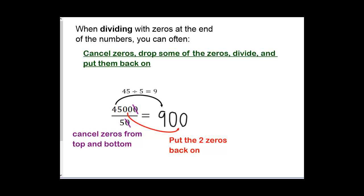Our first example is 45,000 divided by 50. One zero on the top and one zero on the bottom cancel because that's dividing top and bottom by 10. Then I ignore the two zeros and take 45 divided by 5 and get 9 and then put the two zeros back on.